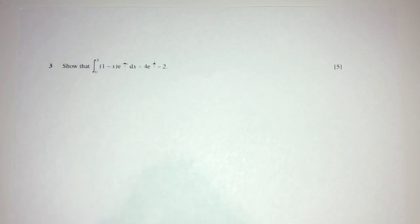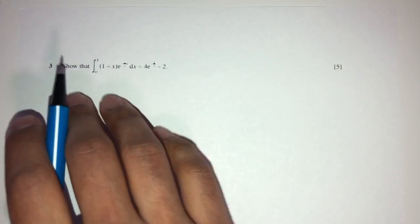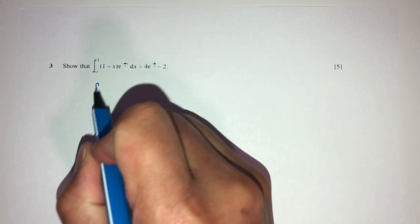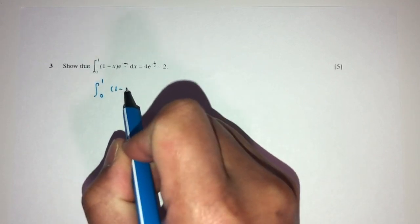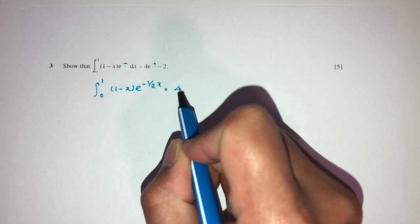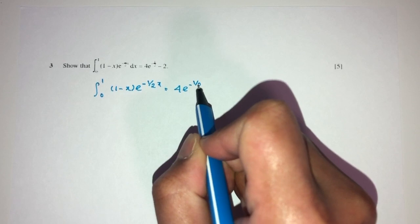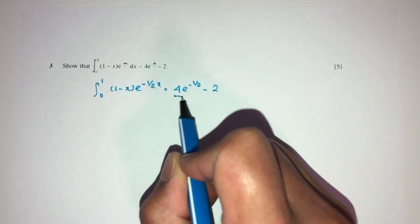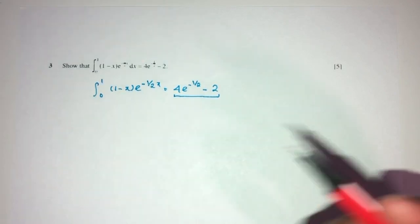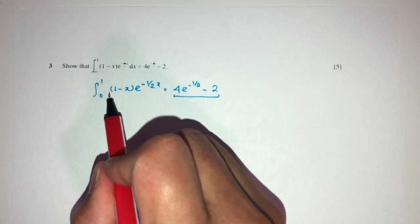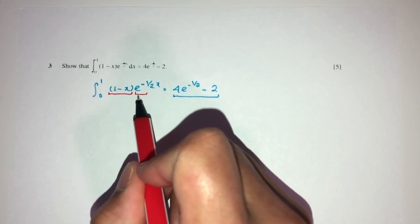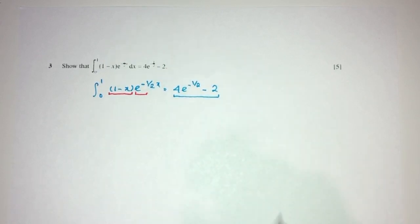Now, let's move on to question number 3. Here we have to show the left-hand side become the right-hand side. Let me write this down again. We have the integration from 0 to 1 of (1-x)e^(-x/2) = 4e^(-1/2) - 2. We have to show this exactly as your end result. By observation, you can see it is the product. We have to use integration by parts.